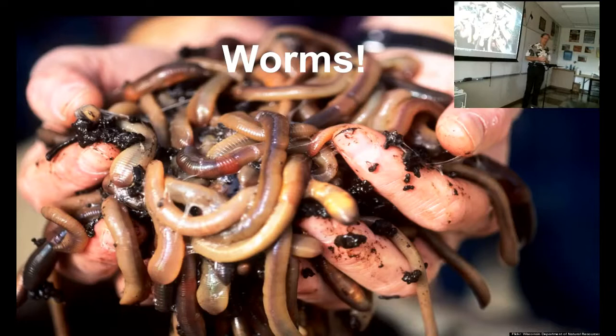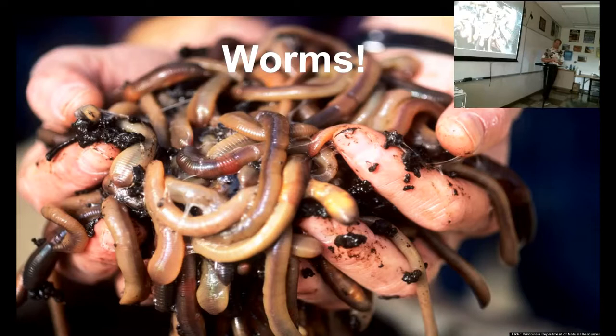Welcome to Worms. This is so exciting. We are moving through the phyla of animal groups. We've done two very simple animal groups, porifera and cnidarians. Now we're moving into more complicated animals. There's actually not a phylum of worms — there are actually four, maybe five phyla of worms. But we're going to deal with them all as one group.